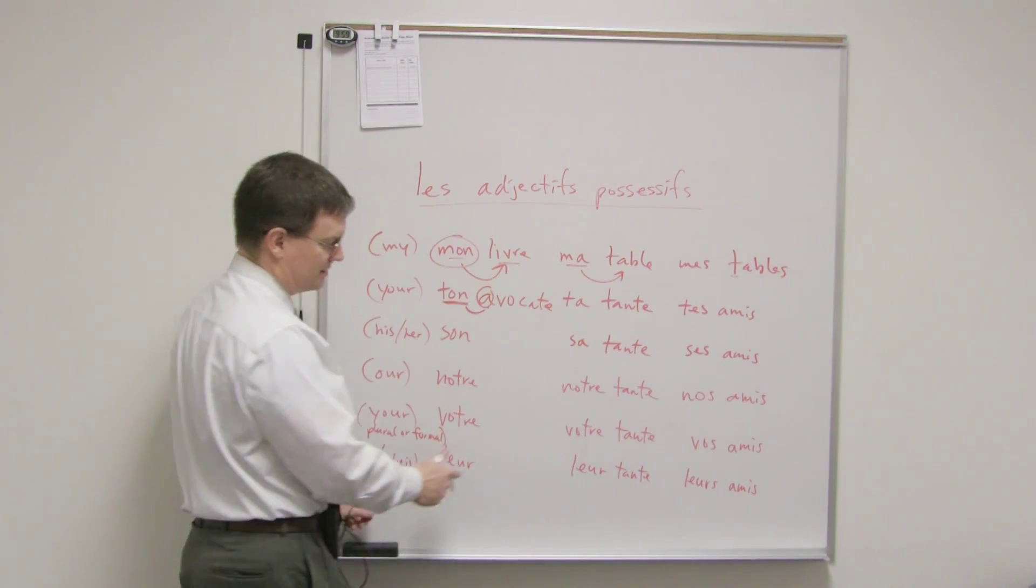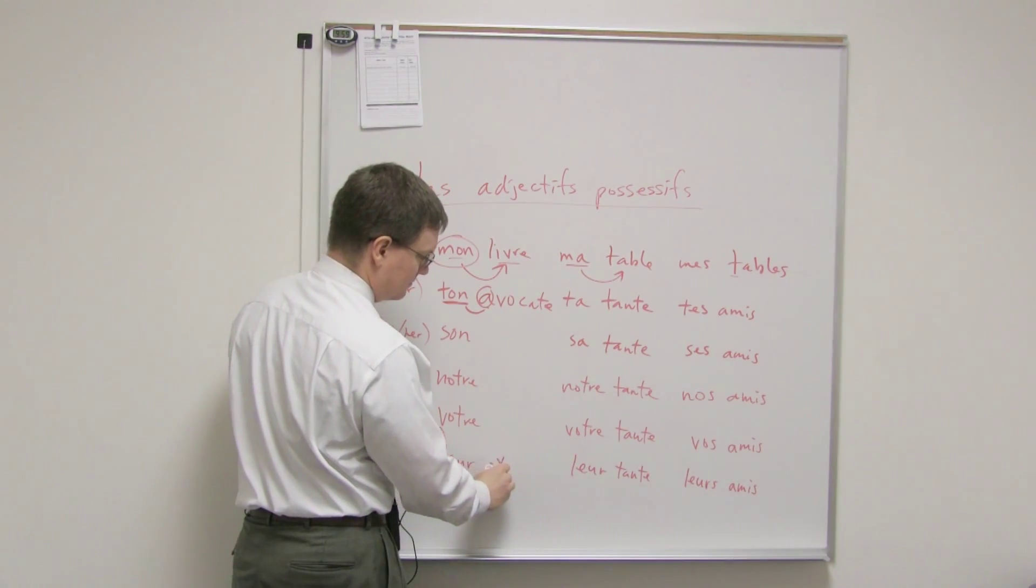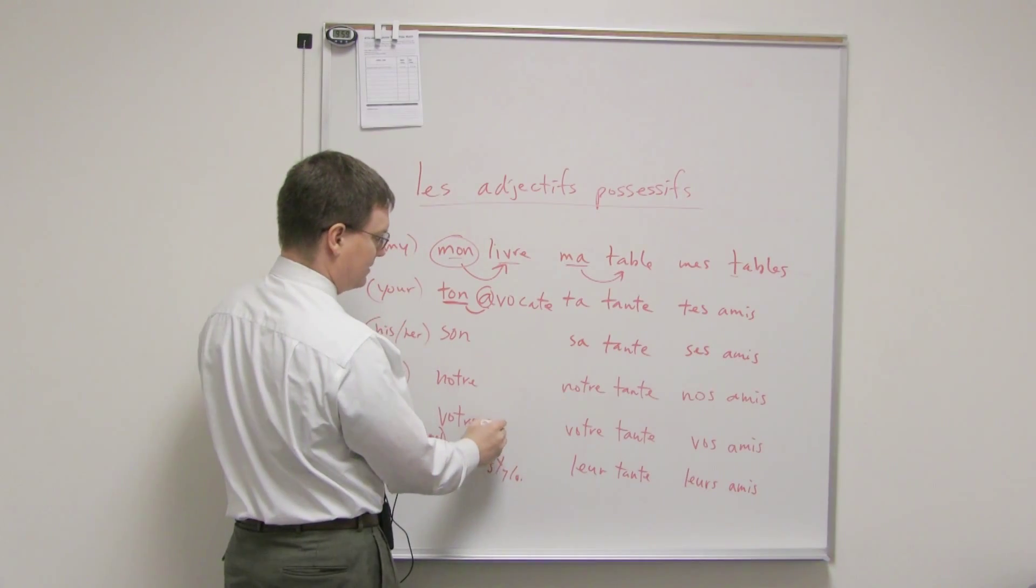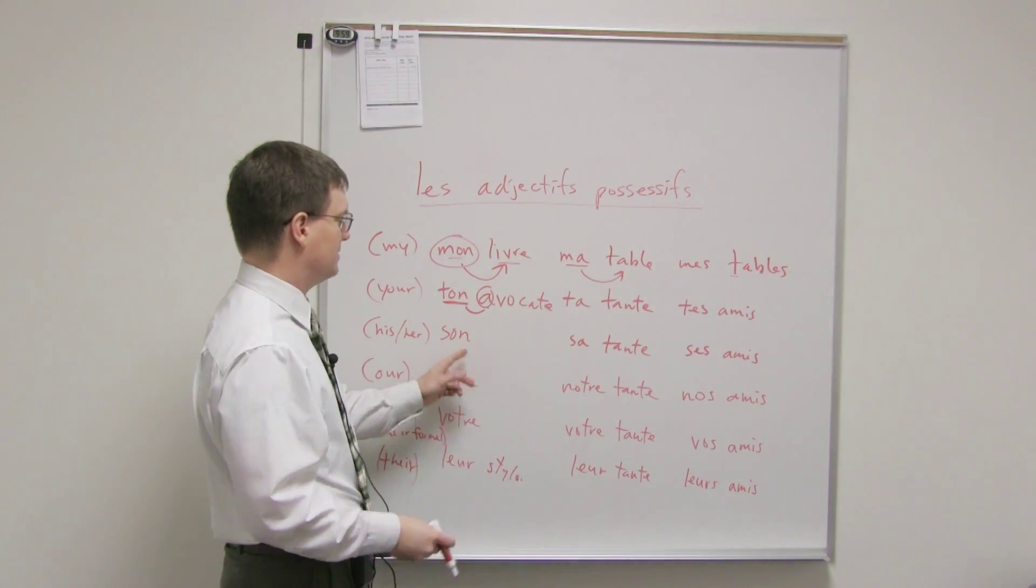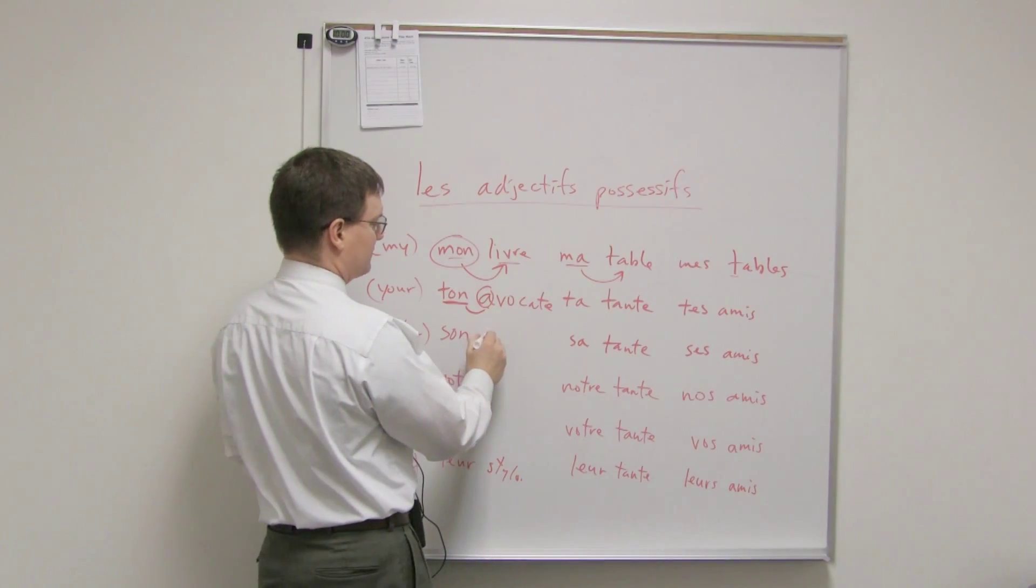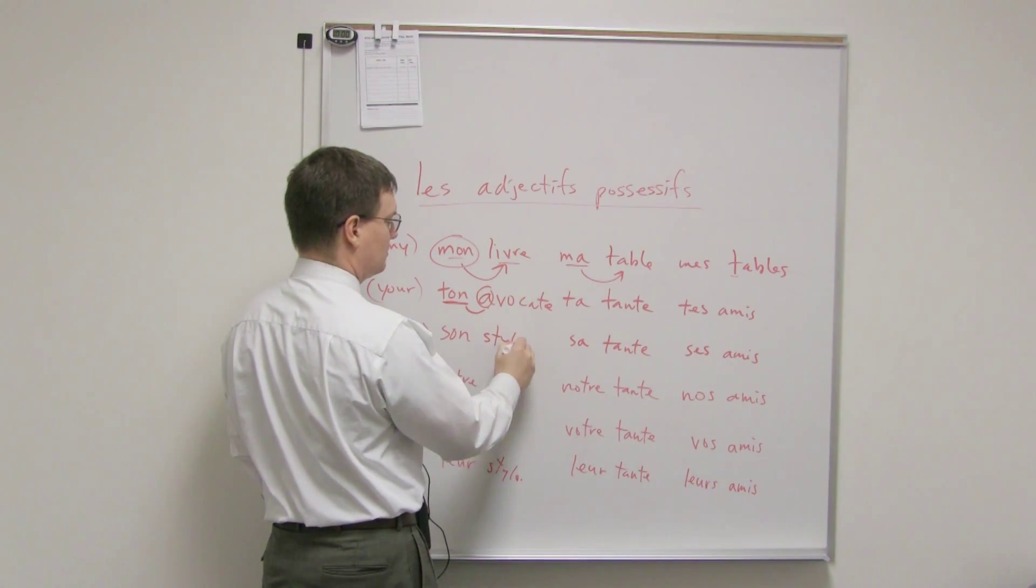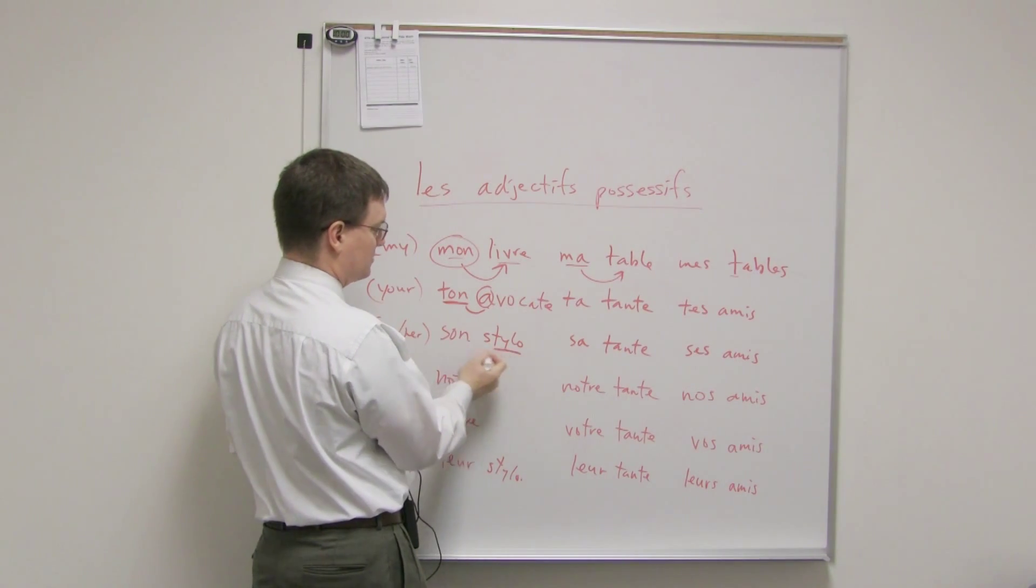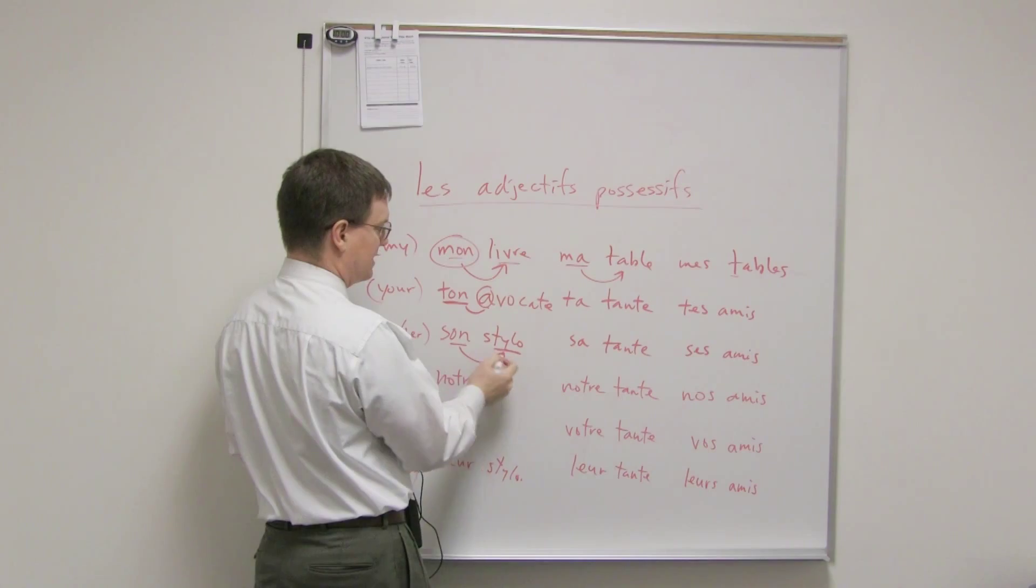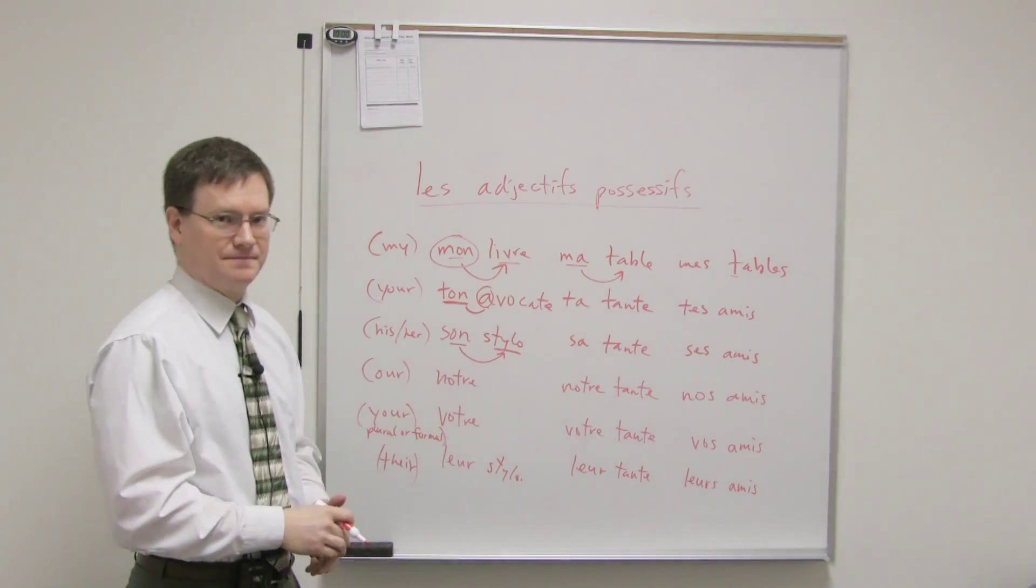So, if I want to say their pen, it would be leur stylo. Your pen, votre stylo. Our pen, notre stylo. His or her pen, it would be son stylo. So, for example, I want to say his pen, it's son stylo. If it's her pen, it's still son stylo. Because stylo is what determines whether this is masculine or feminine, not the possessor.